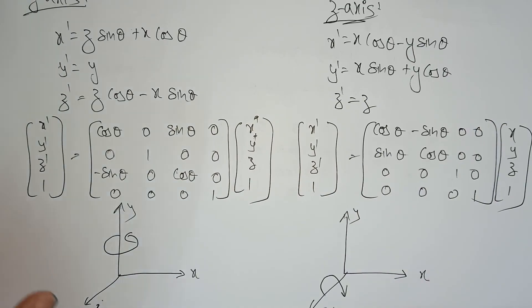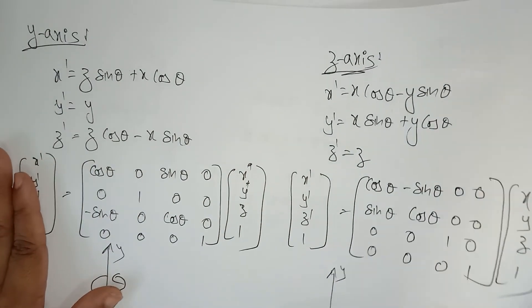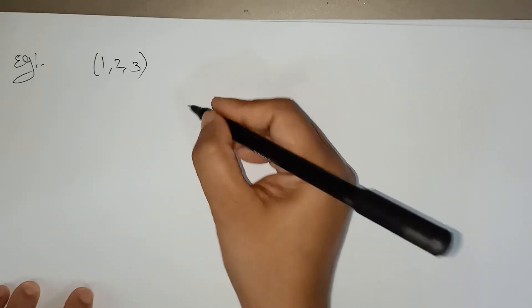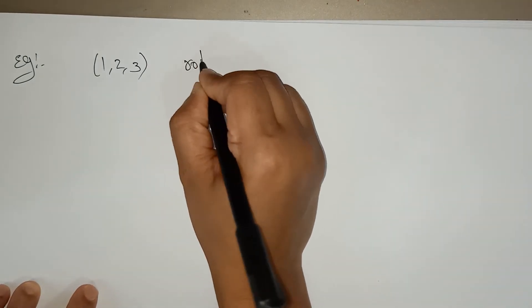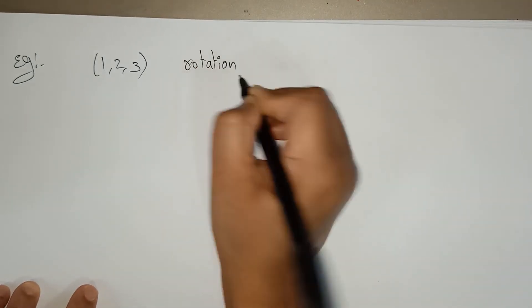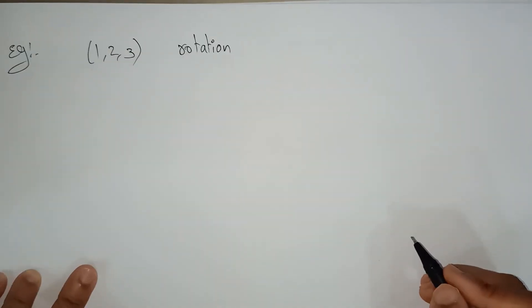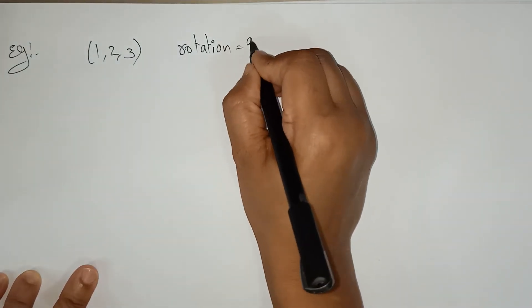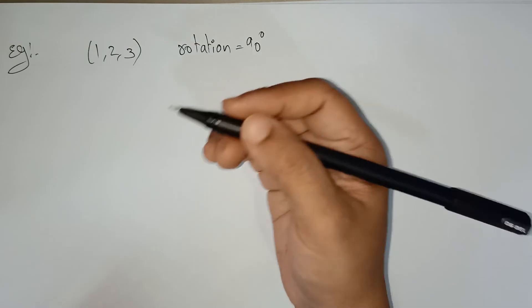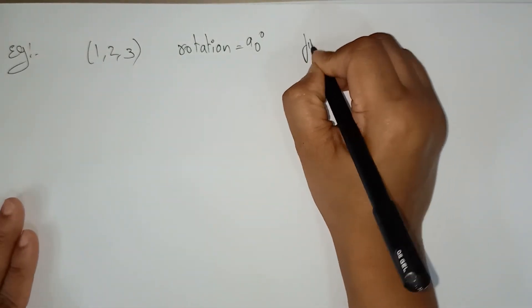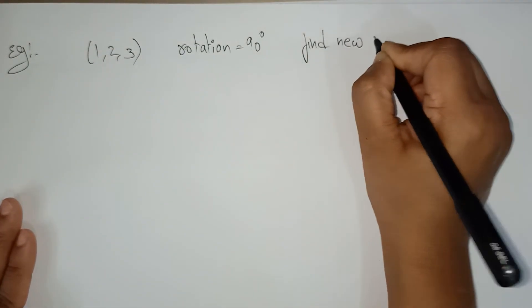Now let's look at an example. Given a homogeneous point (1, 2, 3), apply a rotation of 90 degrees towards the x, y, and z axes. I need to find the new coordinates after rotation in all three directions.